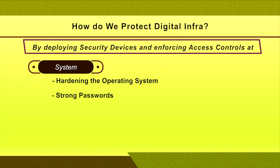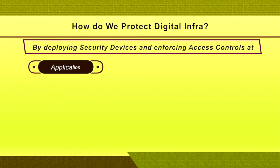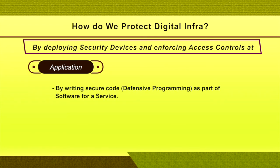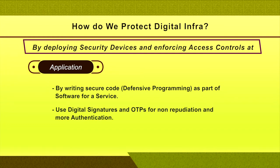Similarly, put strong passwords and perform many such things at the system level. When it comes to the application level, write secure code — we call it defensive programming — as part of software for a service. Protecting digital infrastructure at the application level compulsorily requires secure code or secure programming. Also, use digital signatures and one-time passwords for non-repudiation and stronger authentication. We can also introduce multi-level authentication.